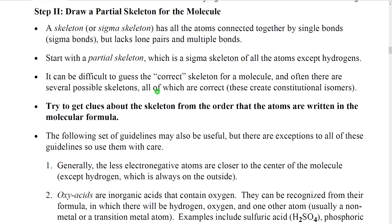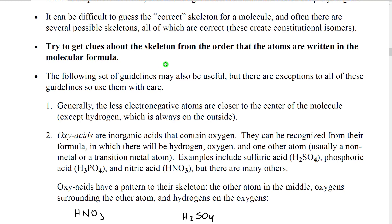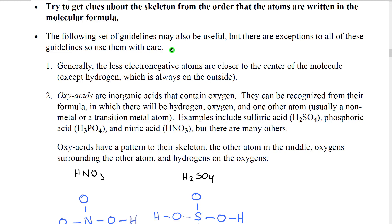Often there are several different possible skeletons that all follow the guidelines — these create what we call constitutional isomers, which we'll discuss later. The most important guideline is to get clues from the order atoms are written in the formula. For example, CH3OH implies a carbon with three hydrogens attached, connected to an oxygen which has one hydrogen attached. Also, less electronegative atoms are generally near the center of the molecule, except hydrogen, which is always on the outside.